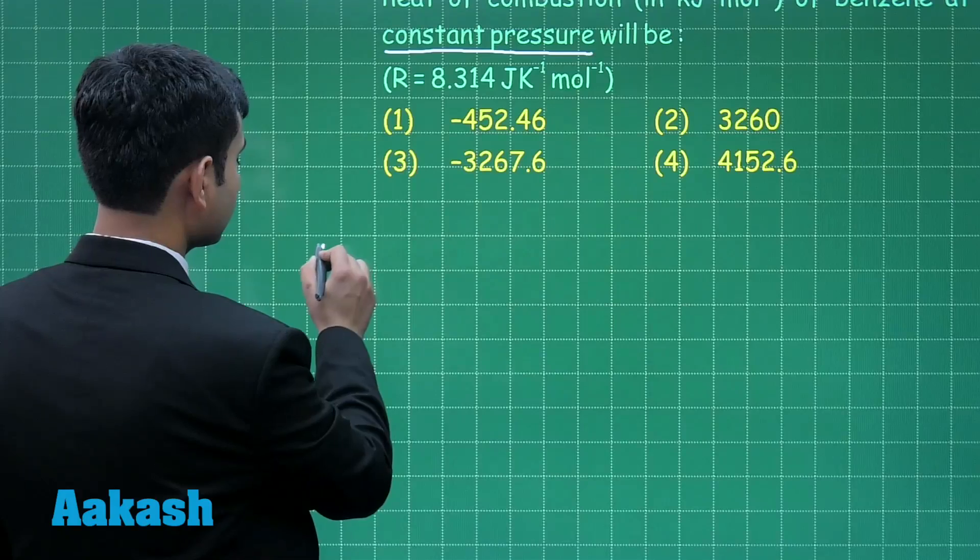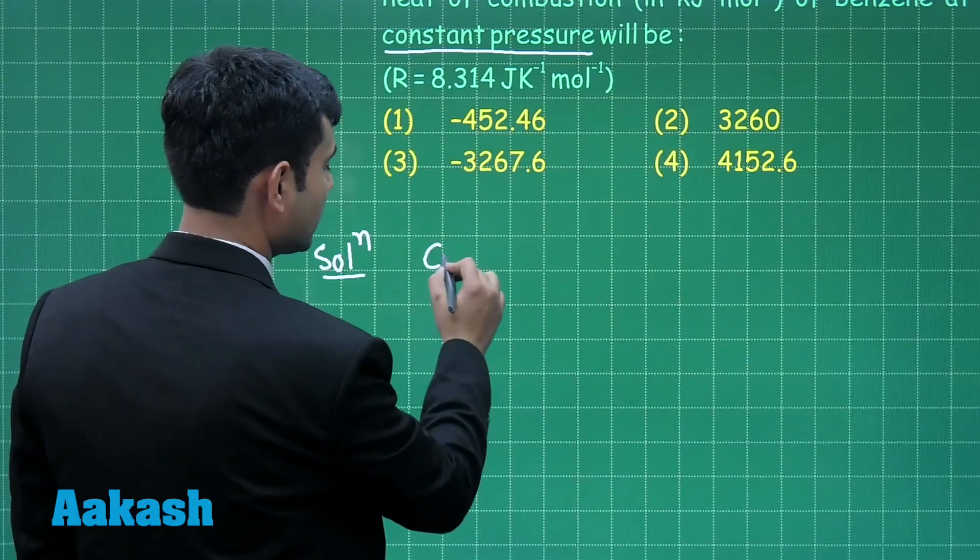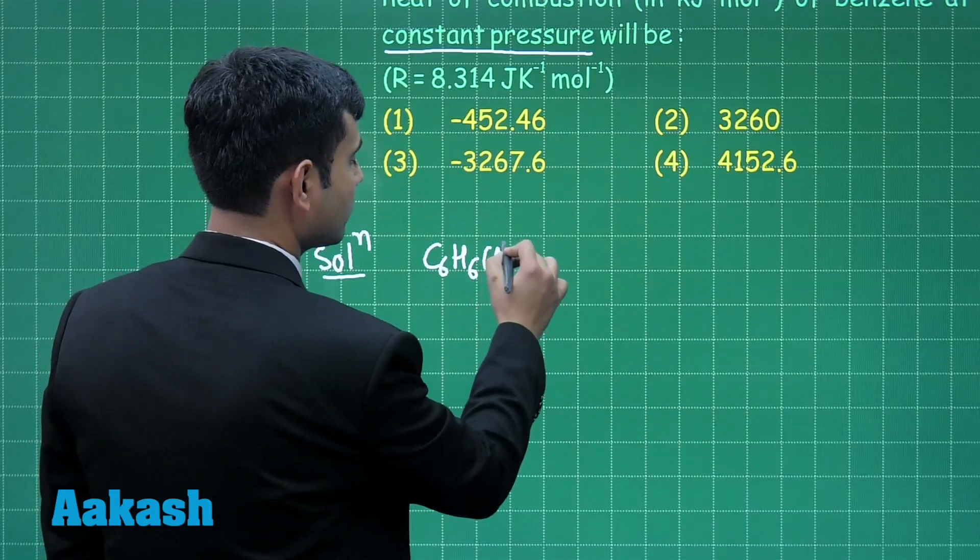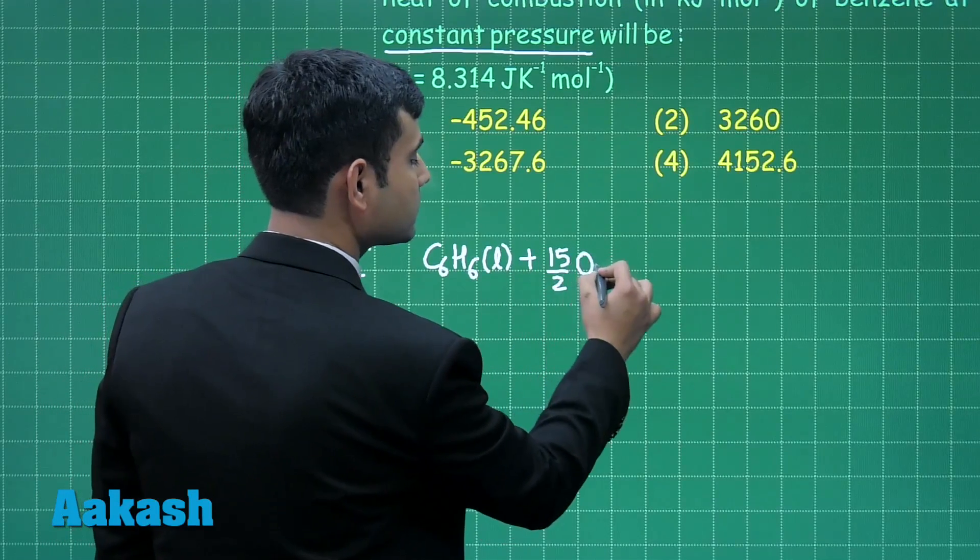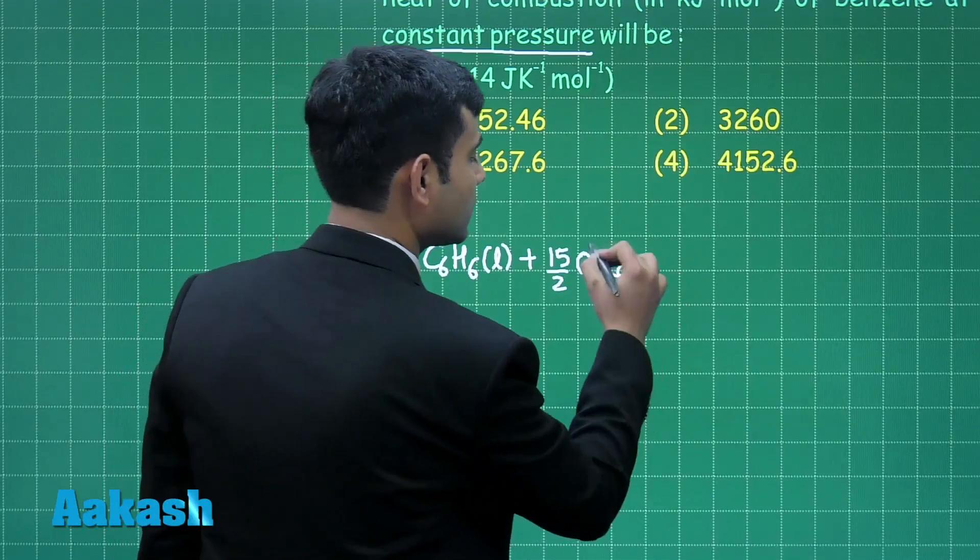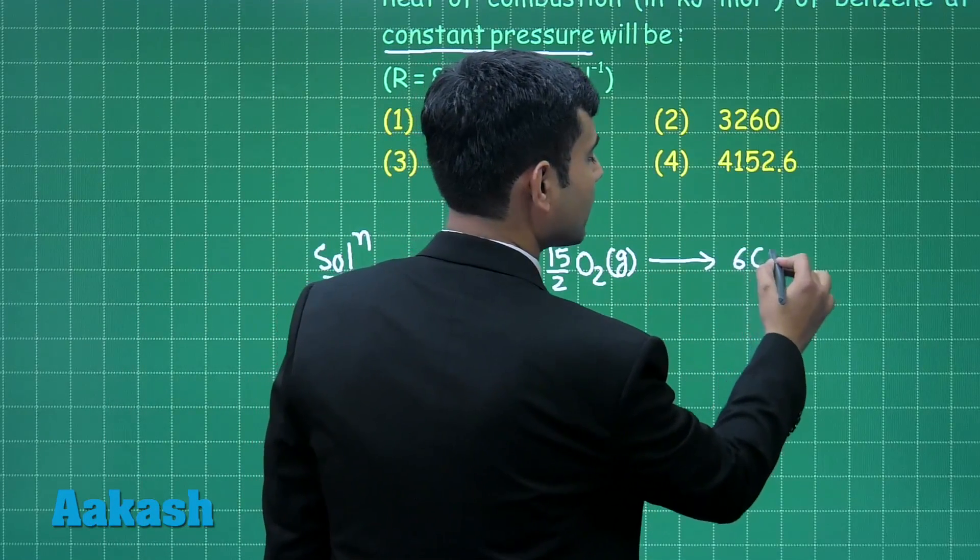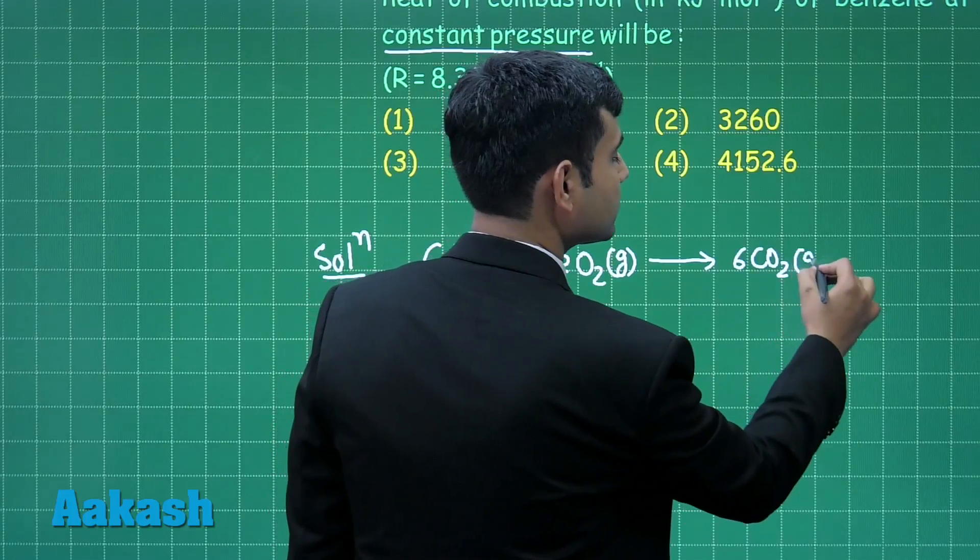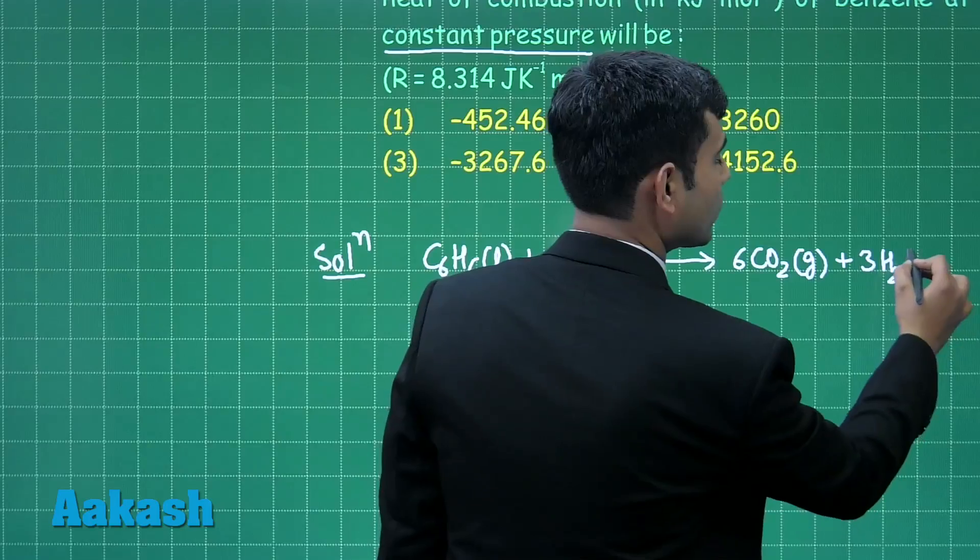For this question, let us write the combustion reaction of benzene. C6H6 liquid when reacts with 15 by 2 moles of O2 gas, this gives us 6 moles of carbon dioxide gas plus 3 moles of water liquid.